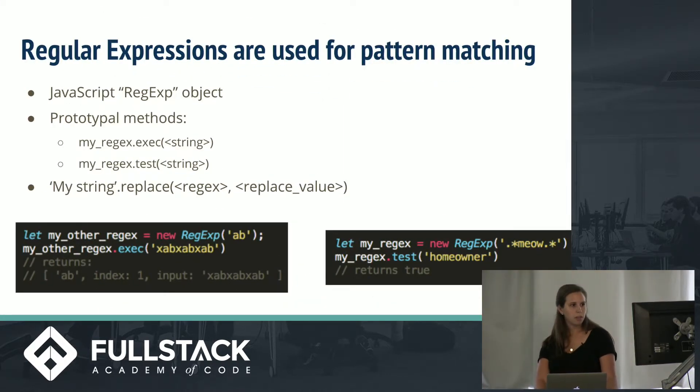So, getting into the practical for a little bit now, there is a native object in JavaScript called RegExp with a P. It has a couple really useful prototypal methods, including execute and test. So, for execute, you'll see over on the left side, it will take in a string and search for that string based on the pattern you defined by your regular expression. If it doesn't match, it'll return null. If it does, it'll return an array that gives you the exact substring that it matched on, the index where it first matched, and the original input. So, that's really helpful. And then, for the test prototypal method, it works in the same way, but it returns a Boolean true or false, whether or not the string matched on the pattern.